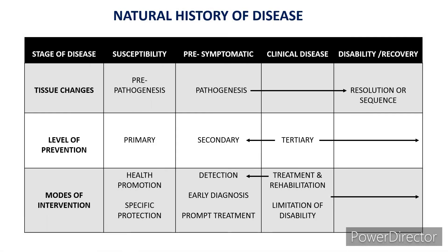This is a tabular representation of everything we have discussed. For example, looking at the top row — stage of disease: susceptibility, pre-symptomatic, clinical disease, and disability. When we consider the susceptibility stage, this is before the occurrence of disease, so there are no pathogenic changes — it is pre-pathogenesis. The corresponding level of prevention is primary prevention. The modes of intervention are general health promotion and specific protection, as we have already discussed.